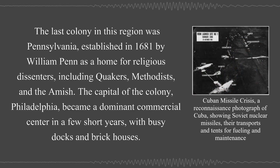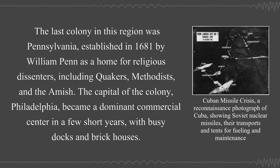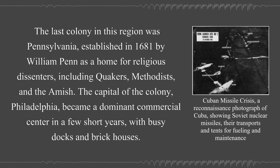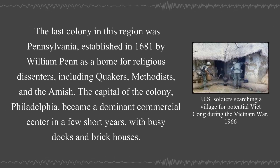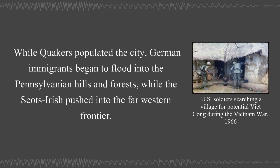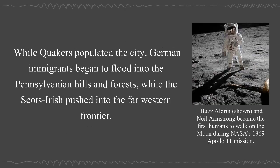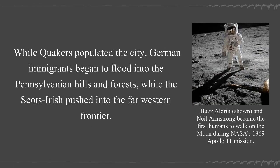The last colony in this region was Pennsylvania, established in 1681 by William Penn as a home for religious dissenters, including Quakers, Methodists, and the Amish. The capital of the colony, Philadelphia, became a dominant commercial center in a few short years, with busy docks and brick houses. While Quakers populated the city, German immigrants began to flood into the Pennsylvania hills and forests, while the Scots-Irish pushed into the far western frontier.